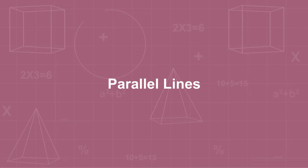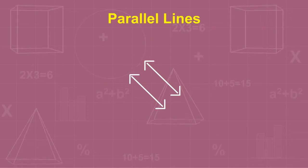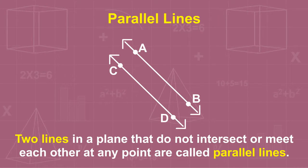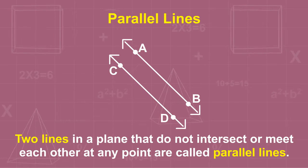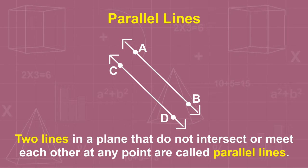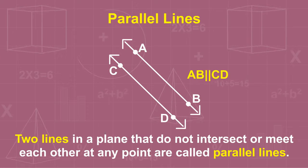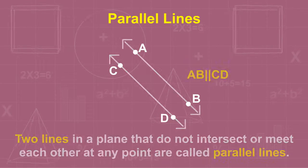Parallel lines: Two lines in a plane that do not intersect or meet each other at any point are called parallel lines. Here, AB is parallel to CD.